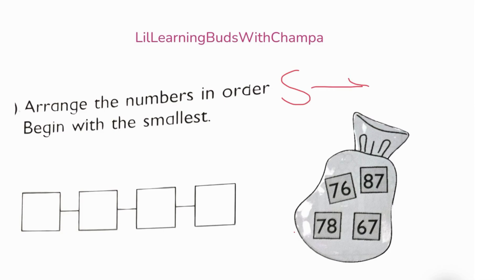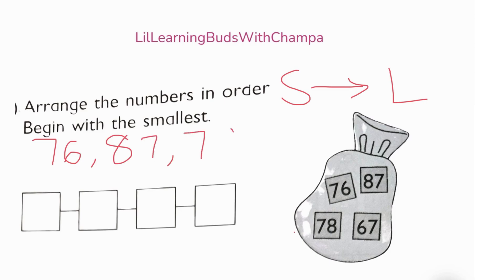Arrange the numbers in order beginning with the smallest number — so go from smallest to largest. First let's write down the numbers from the set: 76, 87, 78, 67. If we know our numbers, the 60s come before the 70s. So that's our first elimination — which number is in the 60s? This one is 70s, this is 80s, 70s — 60s!